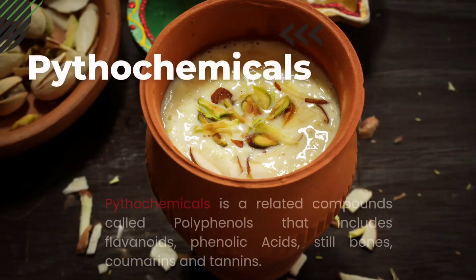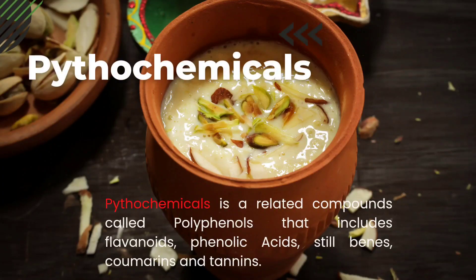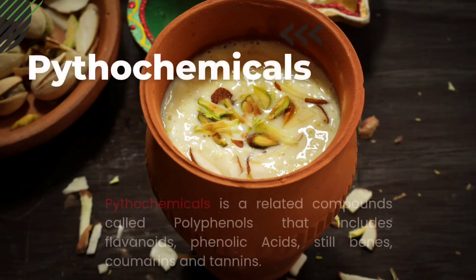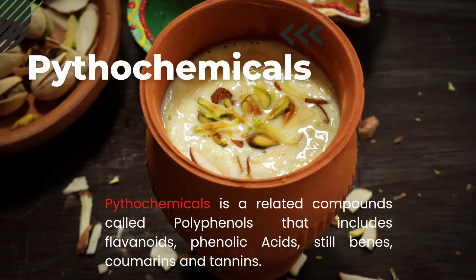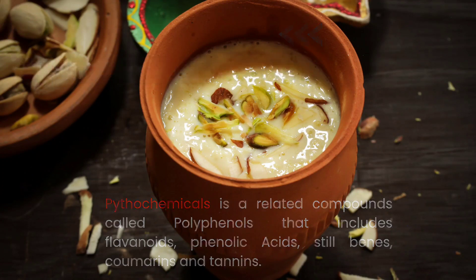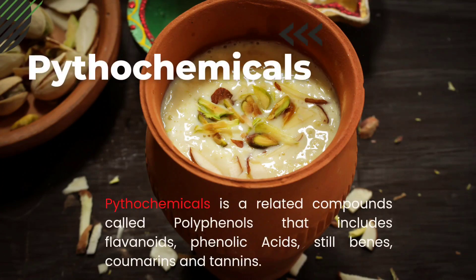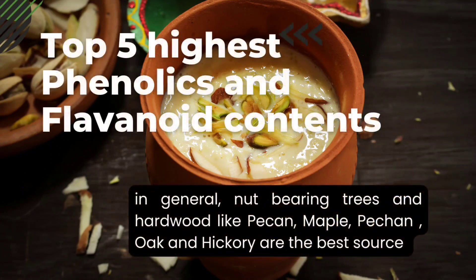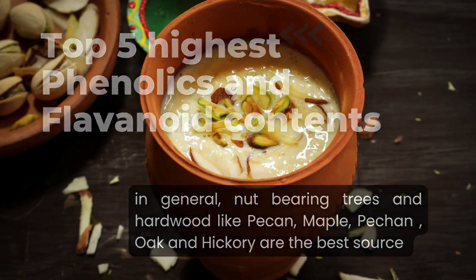What are phytochemicals? A related group called polyphenols includes flavonoids, phenolic acids, stilbenes, coumarins, and tannins. In general, nut-bearing trees and hardwoods like pecan, maple, oak, and hickory are the best sources.